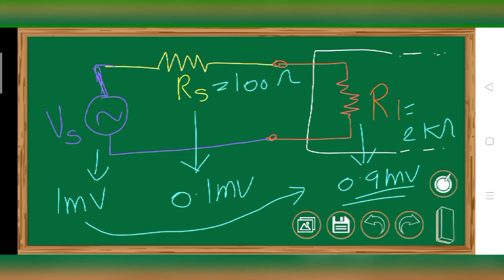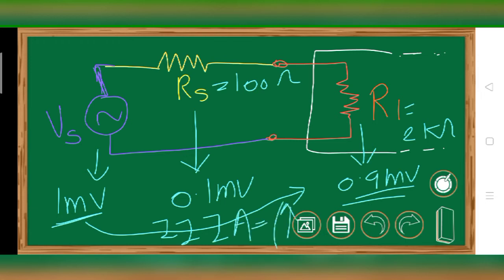We designed the amplifier to amplify 1 millivolt to 1 volt. Although we're getting 0.9 millivolts at R1 rather than exactly 1 millivolt, there is a slight difference but it is acceptable. That's why the internal input impedance of the amplifier should be as high as possible.